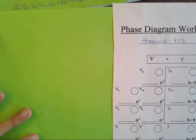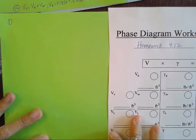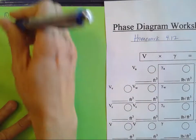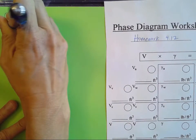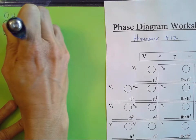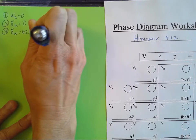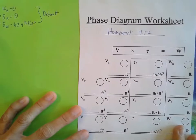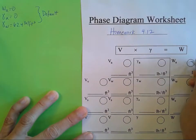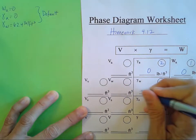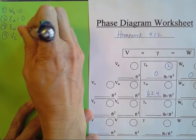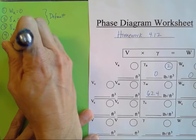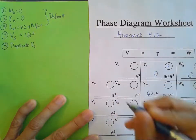We'll start with the default values: the weight of air is 0, gamma air equals 0, and gamma water equals 62.4 pounds per cubic foot. I'll fill those into the phase diagram. We're also given that the volume of the dried solids is one cubic foot.